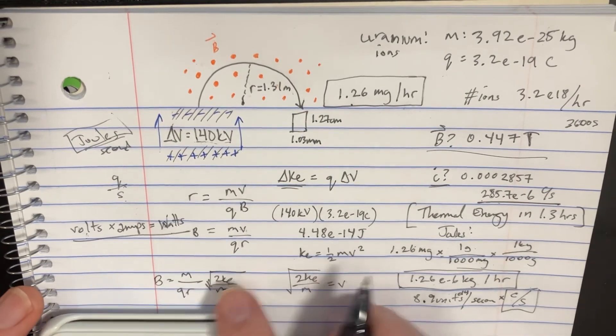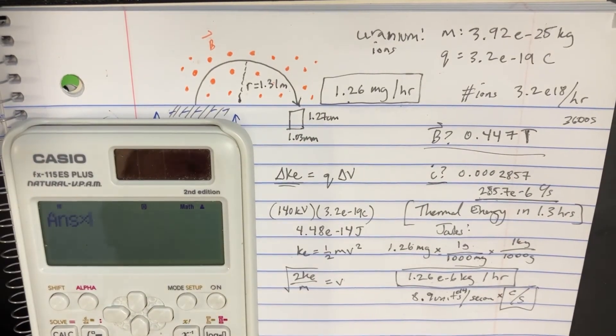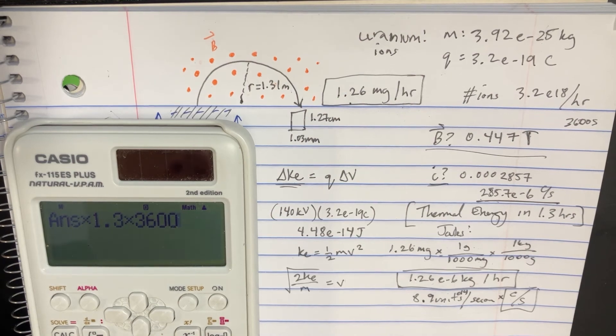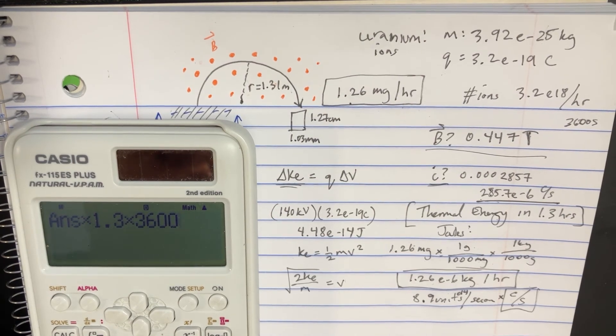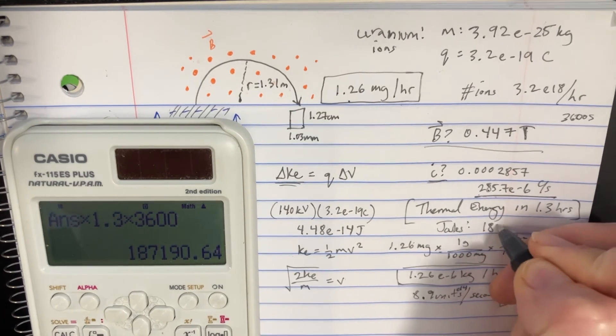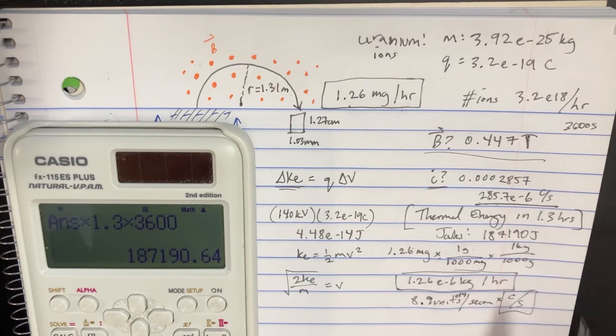If we take the watts and multiply it by the 1.3 hours then we're going to get rid of the seconds. 1.3 but we should also multiply that by 3600 because that's how many seconds there are in an hour. So we get 187,190 joules after 1.3 hours.